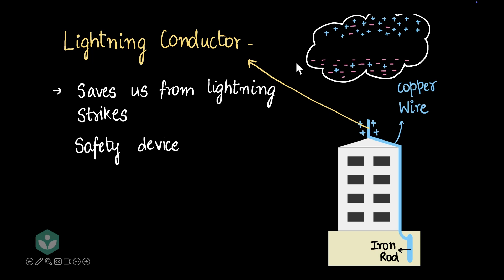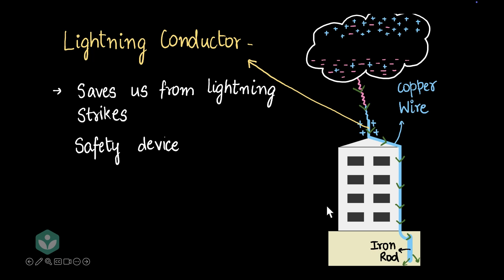When that happens, the negative charges in the cloud are attracted to the positive charges on the lightning conductor, and vice versa. The negative charges start moving toward the lightning conductor, and the positive charges from the conductor move toward the negative charges in the cloud — and bang, you have lightning. The charges flow to the ground through the conductor and get distributed in the ground, so nothing happens to people inside the building. Because the lightning conductor is the topmost point on the building and closest to the cloud, lightning will strike the conductor only, keeping people within the building safe.